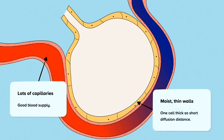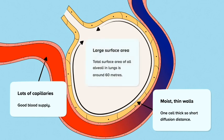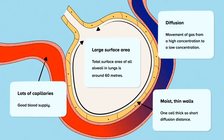The alveoli have moist thin walls and capillaries are only one cell thick, therefore a very short diffusion distance for gases to travel. The alveoli has a large surface area making gaseous exchange even more efficient. The oxygen and carbon dioxide diffuse between the alveoli and capillary. Diffusion is a movement of gas from a high concentration to a low concentration.